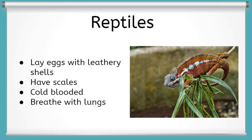Another animal class is reptile. Reptiles lay eggs with leathery shells. They have scales, are cold-blooded, and breathe with lungs. Examples of reptiles that you might know include snakes, lizards, crocodiles, and turtles.